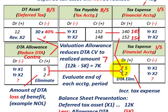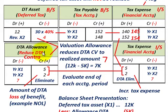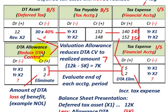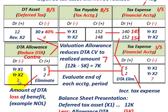We evaluate at the end of each accounting period. Now let's say we're going to realize the total deferred tax asset of $12,000 and we want to eliminate the deferred tax asset allowance account. We already had reduced it by a total of $7,000. So whatever credit balance you have, you debit it out by $7,000 to eliminate the account. The credit amount would go to tax expense — we credit or reduce our tax expense by $7,000.